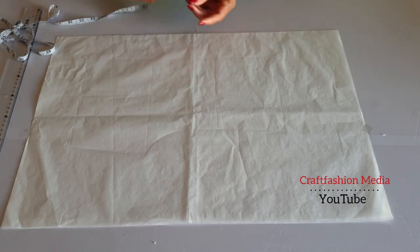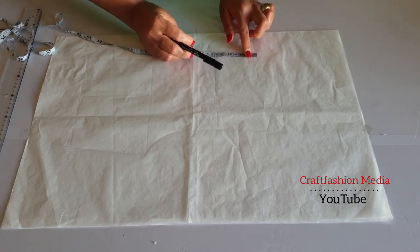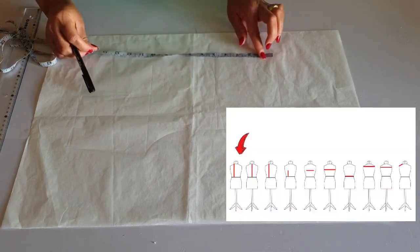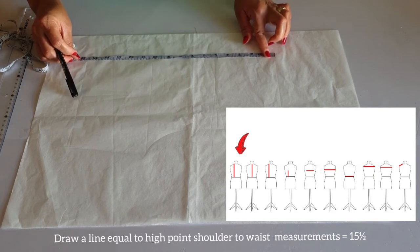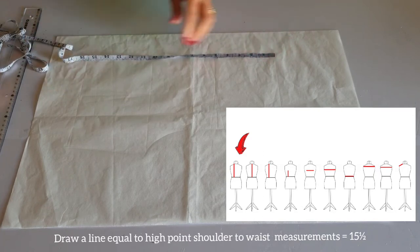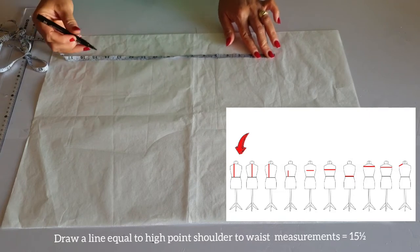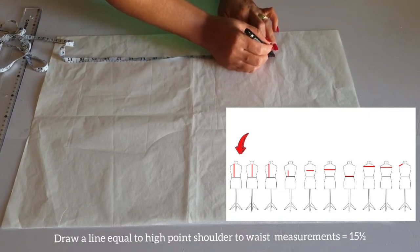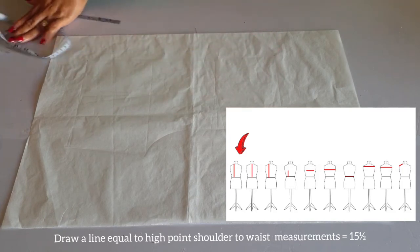So the first step to take is to draw a line equal to my high point shoulder to waist measurement. According to my measurement, I have 15 and a half inches. So I am going to draw a line equal to that.